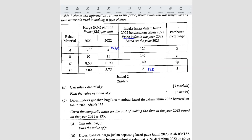Question B. Given the composite index for the cost of making the shoe in the year 2022 based on the year 2021 is 135. So this is the composite index — 2022 based on 2021. Find the value of P. So basically they want you to use the composite index formula.